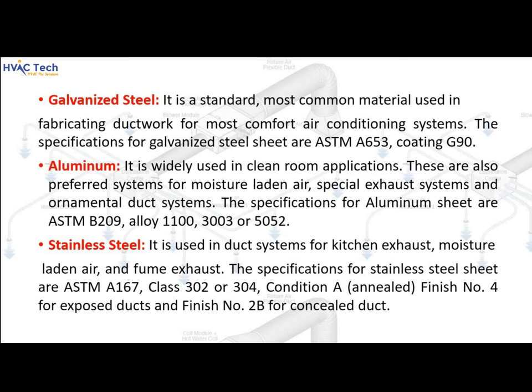Stainless steel is used in duct systems for kitchen exhaust, moisture-laden air, and fume exhaust. The specifications for stainless steel sheet are ASTM A167, class 300 and 304, condition A. Finish number 4 is used for exposed ducts, and finish number 2B for concealed ducts.